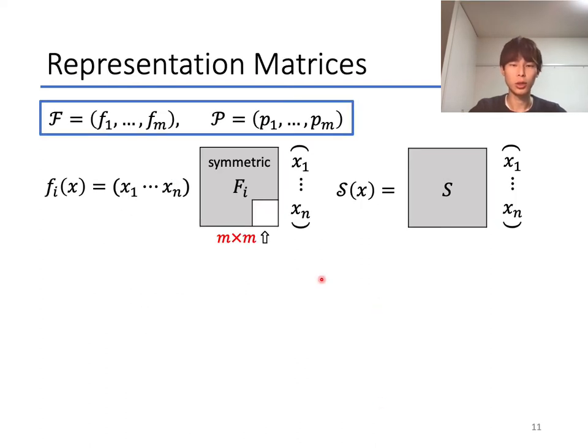Next, I introduce the representation matrices for the public and secret keys of UOV. When we assume the order of the finite field, then the polynomial f_i of the central map F is represented by an n times n symmetric matrix F_i, like this. And then, every lower-right submatrix of F_i becomes zero matrix, since this part represents coefficients of quadratic terms in m variables from x_{v+1} to x_n.